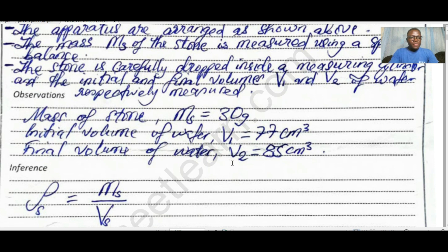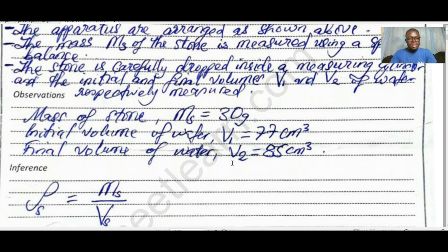You have to take your observations. First, measure the mass of the stone — in this case we assume a stone of 30 grams. Take note that this experiment might come with different masses, so it would be very bad to copy values from someone else; always follow the procedure. The initial volume in our measuring cylinder was 77 cm³, and the final volume after the solid was dropped in is 85 cm³.